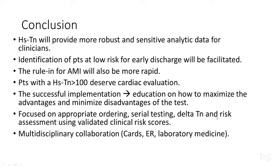In summary, the benefits of using the high-sensitivity troponin include more robust and sensitive data for the clinician. Identification of patients eligible for early discharge will be much easier and more facilitated. The rule-in for MI is now more rapid — if the troponin is more than 100, the patient is automatically ruled in. The success of implementation will be based on education about maximizing advantages and minimizing disadvantages.